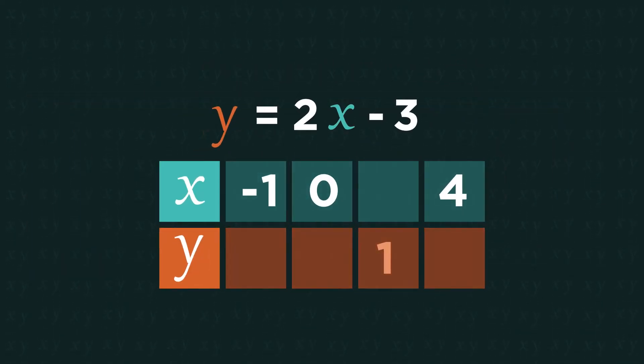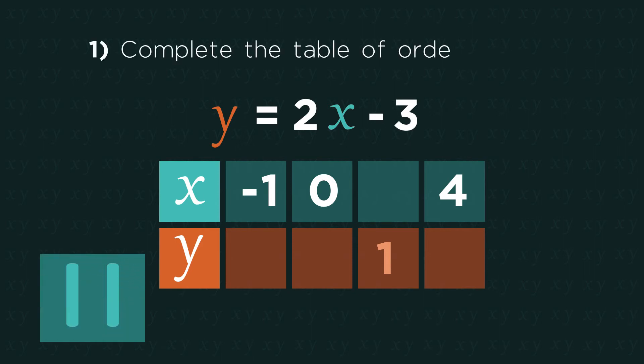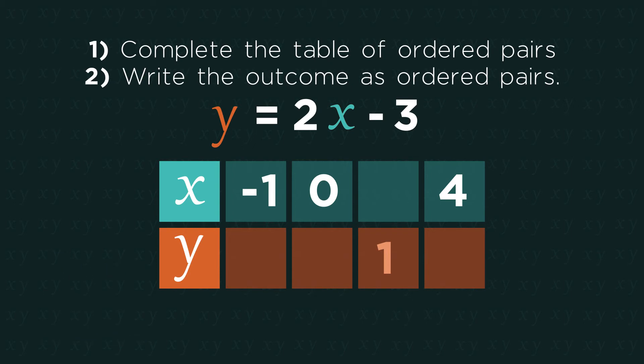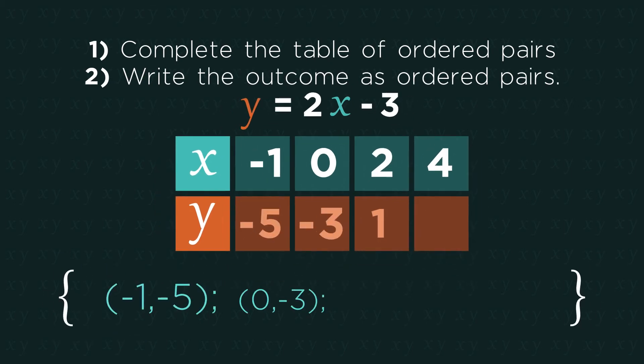So sometimes you might be given a mixture of x and y values and have to work out the missing values. Pause the video and complete the table of ordered pairs. Did you get them right?